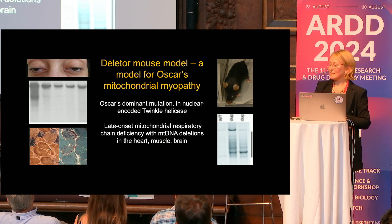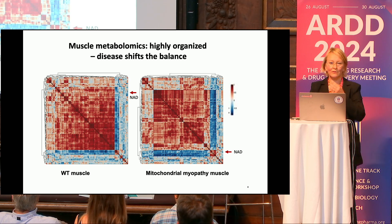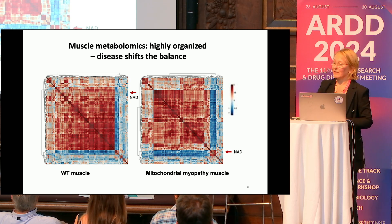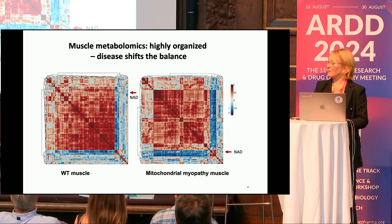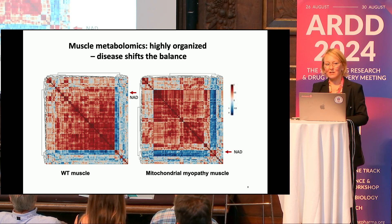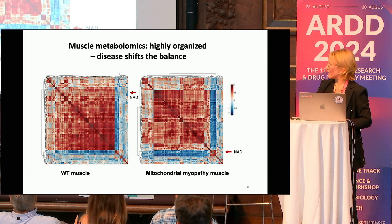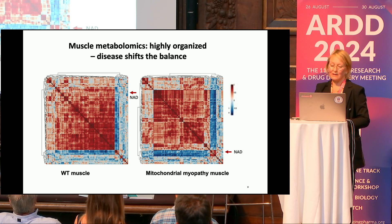We did a metabolomic study, and what is amazing when you look at the muscle metabolome is that it's very organized. We started to pay attention that there was one metabolite changing its behavior — first positively correlating with most of the metabolites, but then in the mitochondrial disease changing its behavior. That metabolite is NAD.